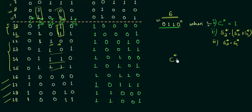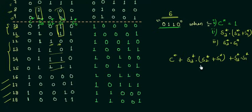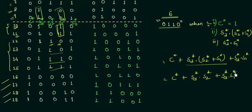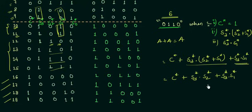We can simplify by combining the three cases: C* OR (S3* AND S2*) OR (S3* AND S1*). Expanding this: C* OR (S3* AND S2*) OR (S3* AND S1*). Notice that S3* AND S1* appears in both the second and third terms, and since A OR A equals A, we can simplify to: C* OR (S3* AND S2*) OR (S3* AND S1*). This is the final logic needed to decide when to add 6.